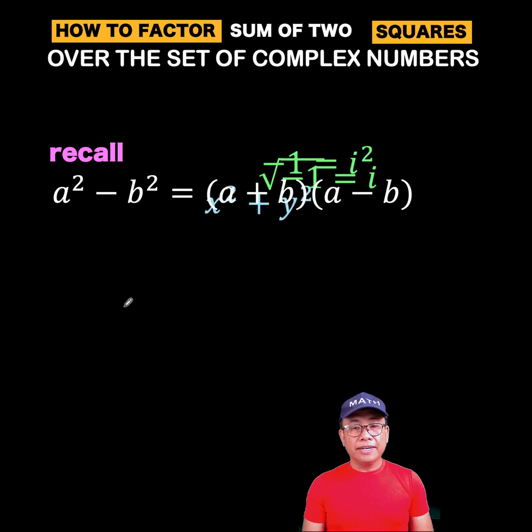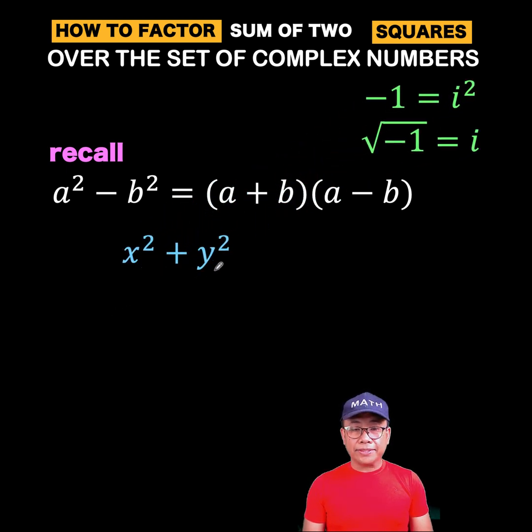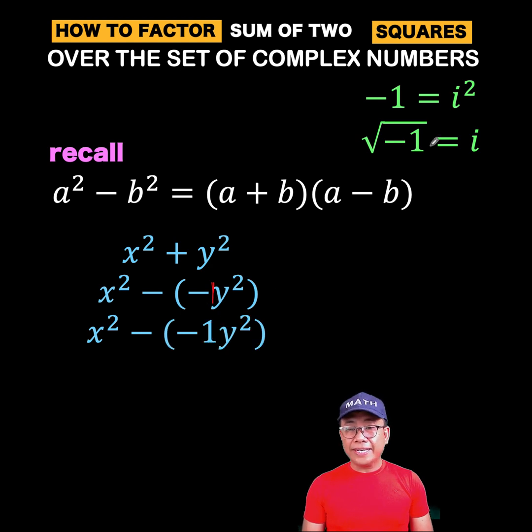Now, let's go back to the given problem, x squared plus y squared. We can write this as x squared minus the negative of y squared because negative times negative will result to this positive. This is just the same as writing a negative 1 here. But what is the value of negative 1? We said that i squared is equal to negative 1. So we can replace this negative 1 with i squared to arrive at this.